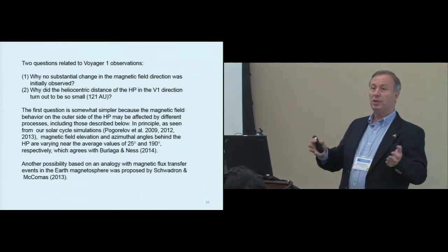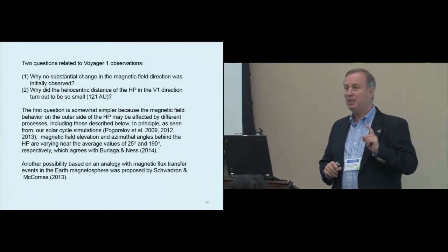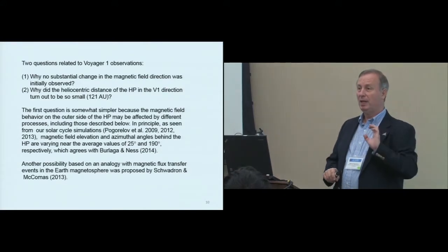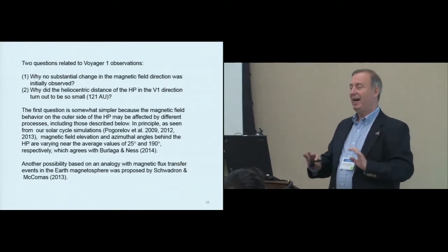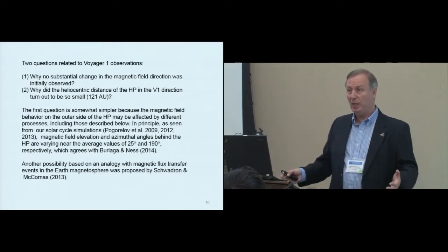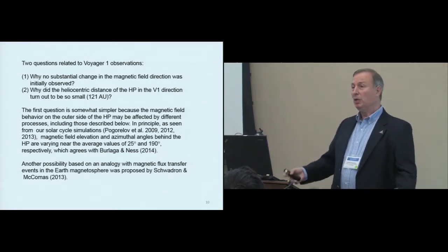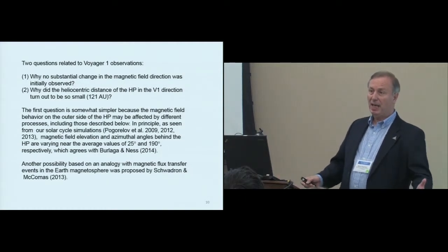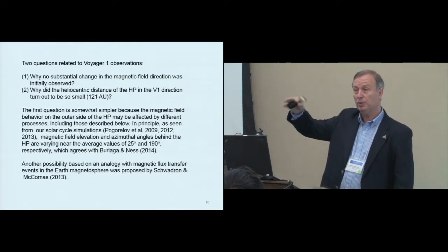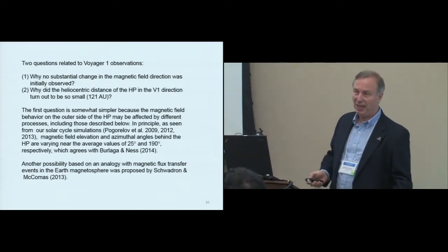Voyager observation. Voyager crossed the heliopause in 2012. More than a year and a half it took for the team to say that probably we agree that it crossed it, because there were so many questions. First of all, it was too early. Nobody expected Voyager 1 to cross the heliopause and enter the interstellar medium so soon. We expected maybe five, six, seven more years. So, too close. Then magnetic field observed beyond the heliopause turned out to be pretty similar to what was observed before the crossing. That's two challenges. There were more.